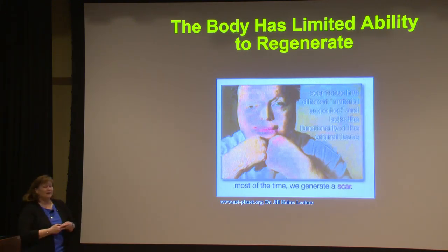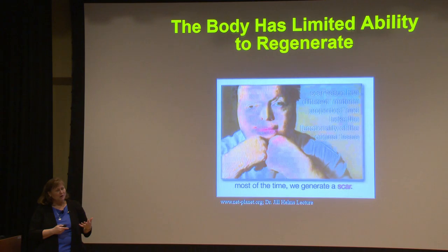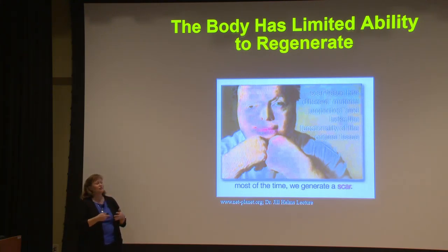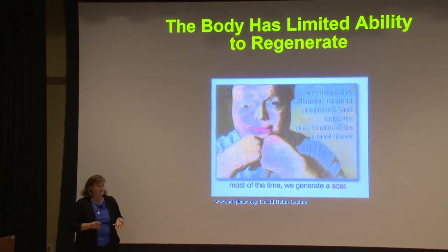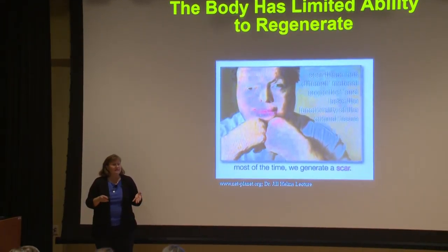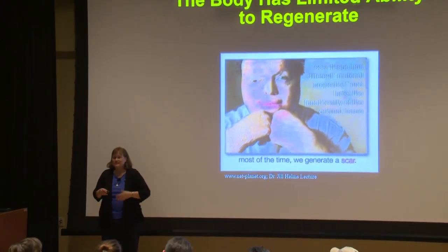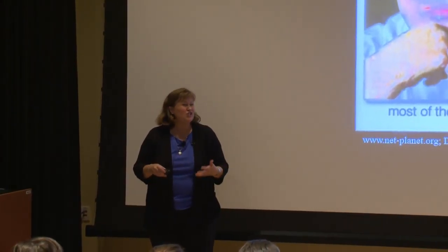Scar tissue obviously doesn't look as good but also has different material properties. When your body scars it doesn't have the ultimate tissue properties — it doesn't have the elastic properties. When your bone tries to heal it doesn't necessarily always have the inherent and original properties. So the bottom line is scarring is a problem and we deal with that in many different tissues, not just your skin but scarring internally as well.